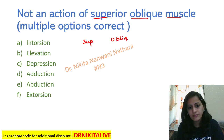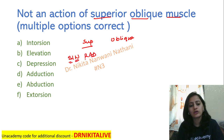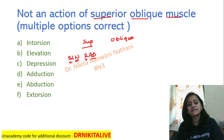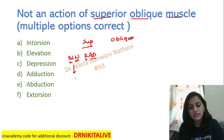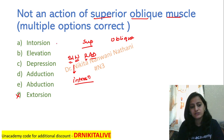Remember the mnemonic SYNRAD: superiors are intortors, recti are adductors except lateral rectus. So superior is an intortor — the action is intorsion for superior oblique. It is not extorsion, so extorsion is not an action. Intorsion is the action.